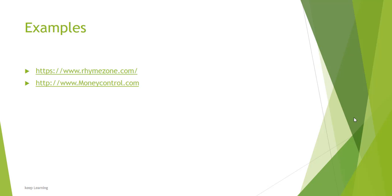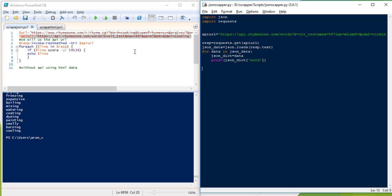Hey guys, welcome back. Today we are going to use Python and try to scrape the website rhymezone.com's one page, both using HTML as well as JSON. Let's see how it can be done.